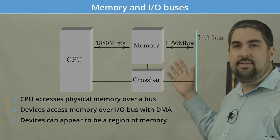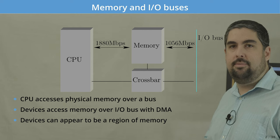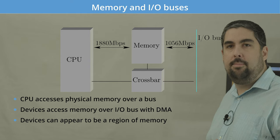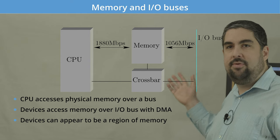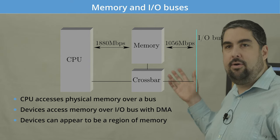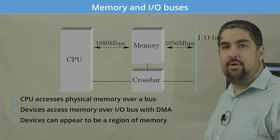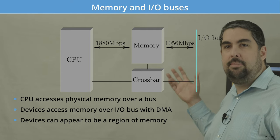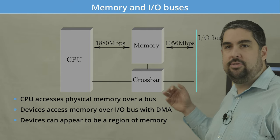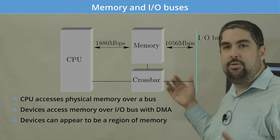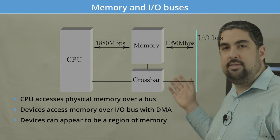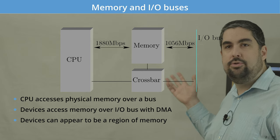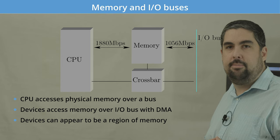Here we can see a basic diagram of a system. We have our CPU, the central processing unit where our code is running and doing all the main computations, and some interface to memory. Memory is also connected to the IO bus where all the devices are going to hang off of. The devices will use the IO bus to typically DMA regions of memory, so they can copy to and from memory to their local buffers. Devices can also appear as regions of memory to the CPU, which is how control interfaces are usually implemented.